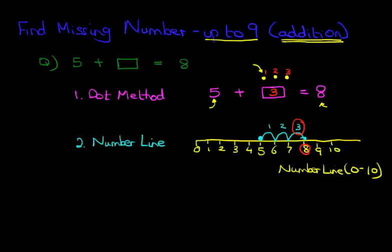So it took 3 jumps to get from 5 to 8. And notice how the 3 is the same 3 as over here. So 2 different methods, but the same result.